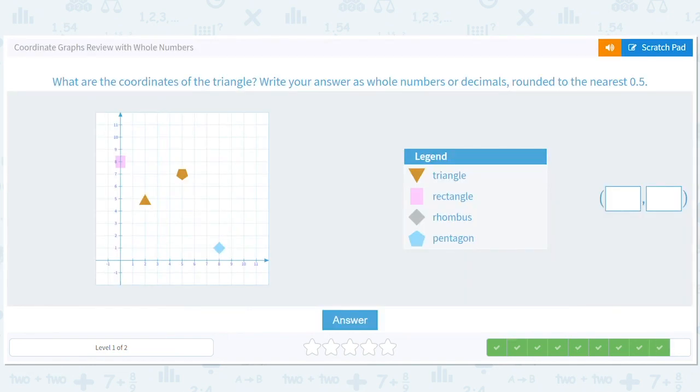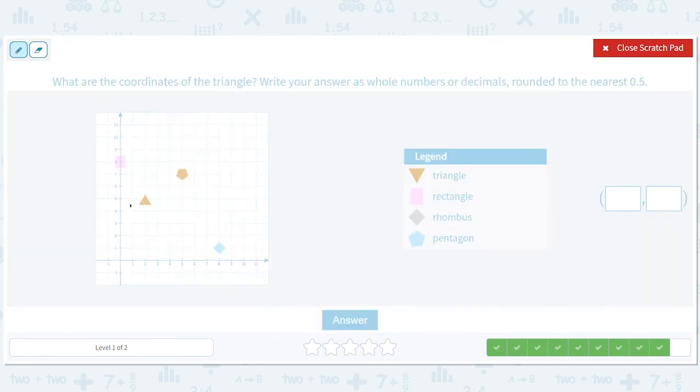What are the coordinates of the triangle? One, two, one, two, three, four, five. (2,5) - two to the right, five up.